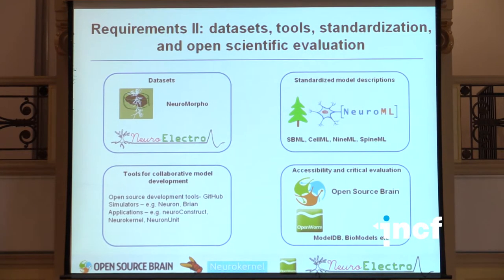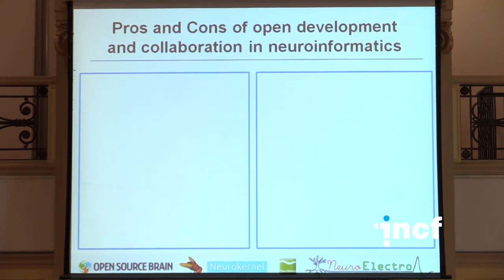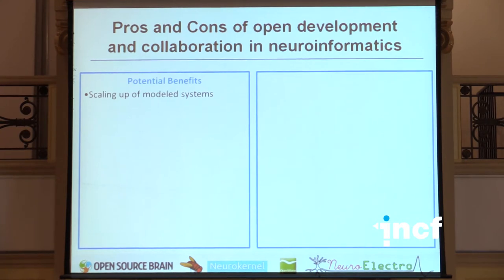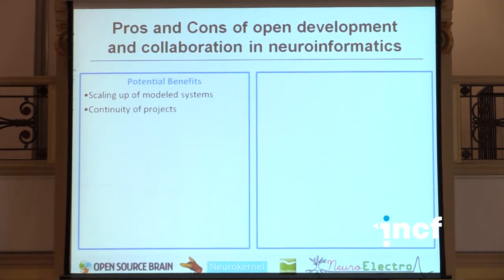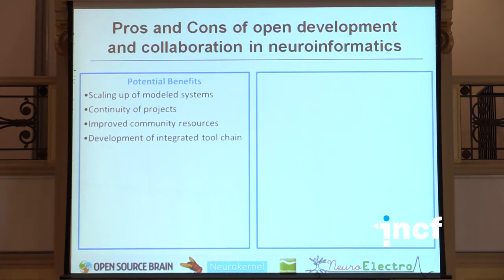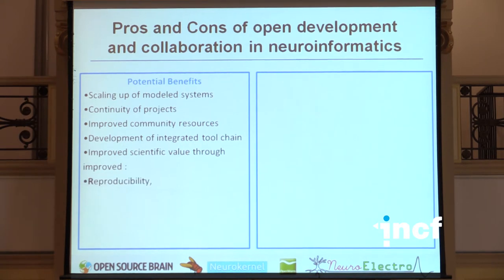So what are the benefits of collaborative modeling? Obviously, scaling up model systems, continuity of projects, improved community resources if we can reuse things, and the development of an integrated toolchain making it much easier to build models of, for example, neurons. But I think the most important thing is that by taking this approach, we'll actually improve the scientific value of computational models of the brain — by improving reproducibility, accessibility, allowing experimentalists to see whether the model matches the biology, portability, and transparency. And reproducibility: unless we have reproducibility, it isn't science.